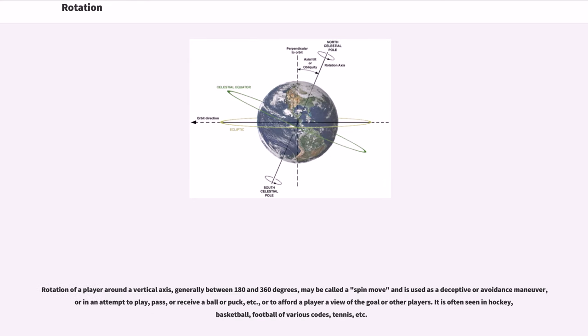Rotation of a player around a vertical axis, generally between 180 and 360 degrees, may be called a spin move and is used as a deceptive or avoidance maneuver, or in an attempt to play, pass, or receive a ball or puck, or to afford a player a view of the goal or other players. It is often seen in hockey, basketball, football of various codes, tennis, etc.